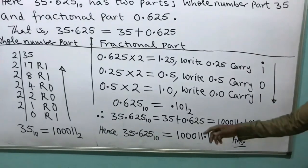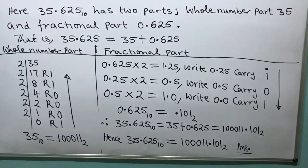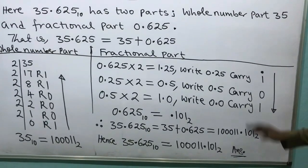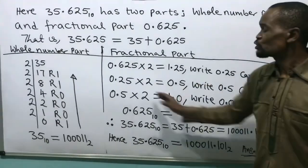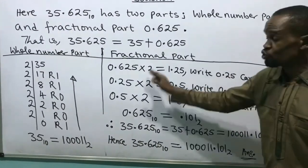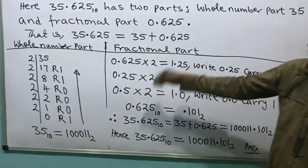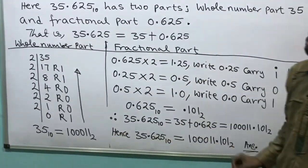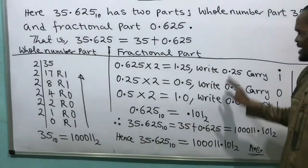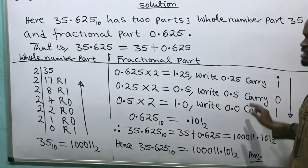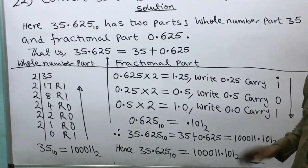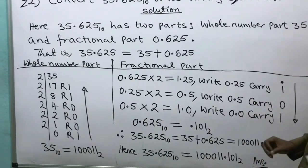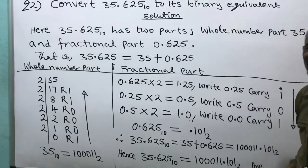Remember: in a fractional part we multiply by 2; in a whole number part we divide by 2. And when it gets to 0.0, we terminate — we are not able to multiply again. That is how it terminates.